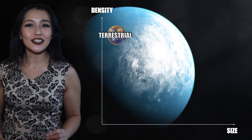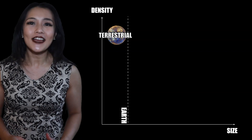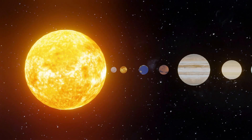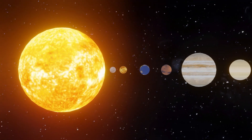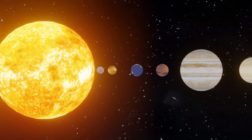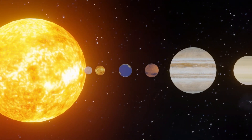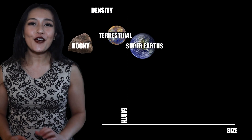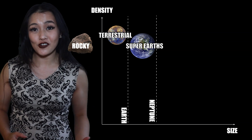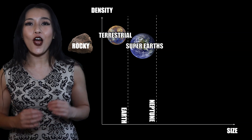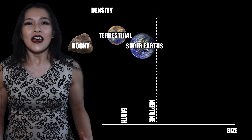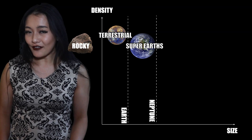Terrestrial planets are Earth-sized or smaller. They're made up of rocks and metals. Our inner solar system planets — Mercury, Venus, Earth and Mars — are all terrestrial planets. Super-Earths are another interest for the search of extraterrestrial life. These planets are rocky but are larger than Earth. They're smaller than Neptune, however.